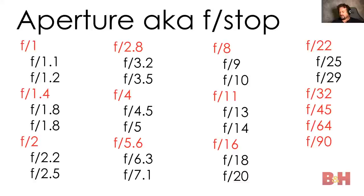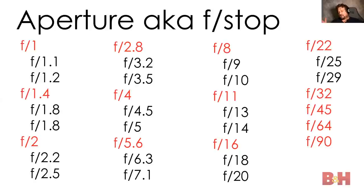Standard f-stops are f1, f1.4, f2, f2.8, f4, f5.6, f8, f11, f16, f22, f32, and beyond. F-stops also have thirds of a stop. With modern cameras, it's easy to access those thirds of a stop — for example, between f2.8 and f4 you can use f3.2 and f3.5. This gives you a lot more control over your exposure. When photographers talk about stops, f2.8 to f4 is one stop, f5.6 to f8 is one stop — it refers to doubling or halving the exposure.